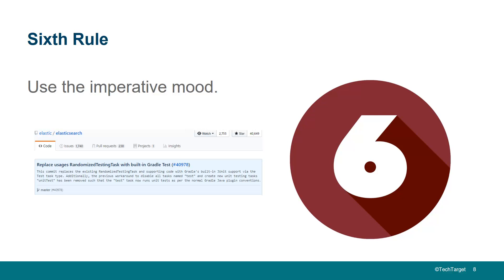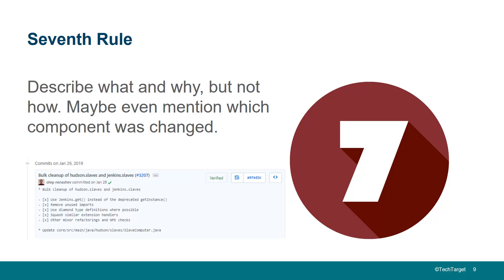Use the imperative mood. That means say 'add' instead of 'added,' say 'fix' instead of 'fixing.' A good rule of thumb is somebody should be able to look at a git commit message and say, 'If applied, this commit will replace usages of randomized testing task with built-in Gradle test.' The title should complete that sentence and make grammatical sense. It's a bit ethnocentric, but for English-style git commit messages, that is the philosophy.